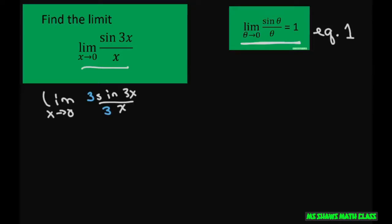So I multiply the numerator and denominator by 3, and then I'm going to pull this 3 right here out in front. So we have 3 times the limit as, and I'm going to go ahead and write 3x approaches 0, because that's my denominator here.